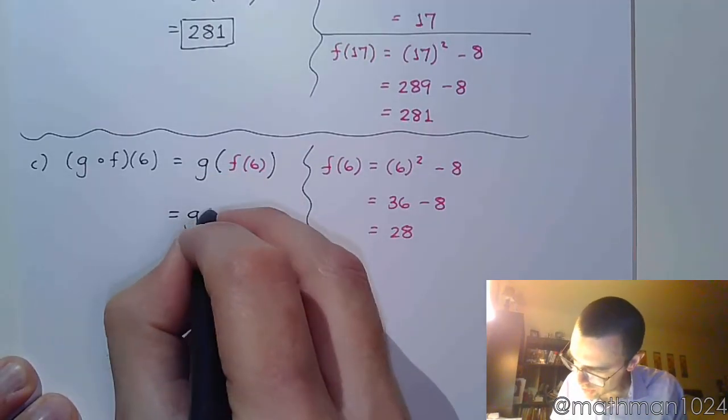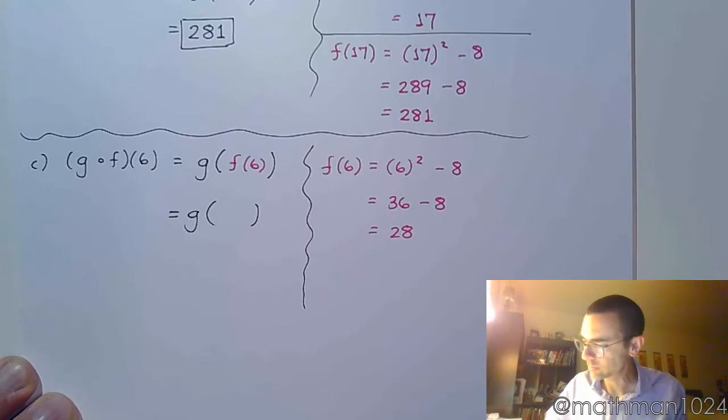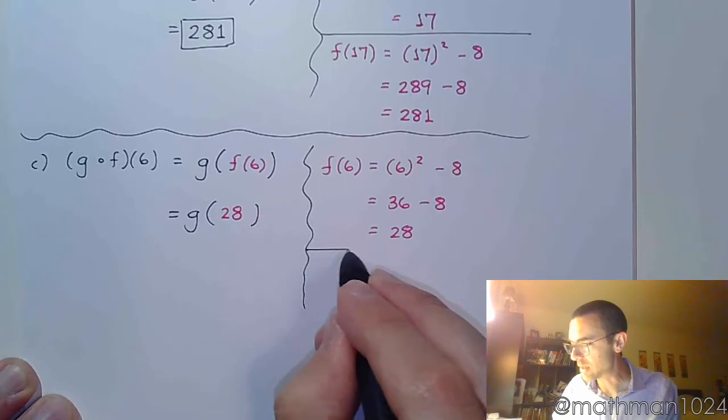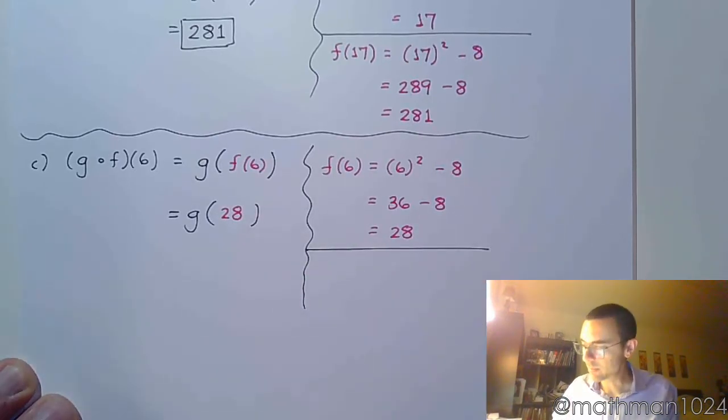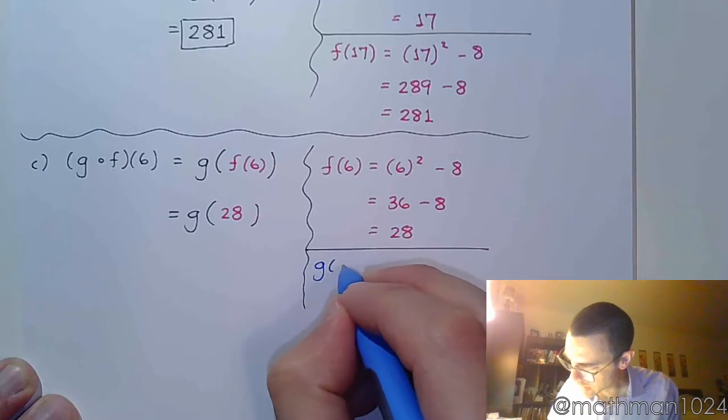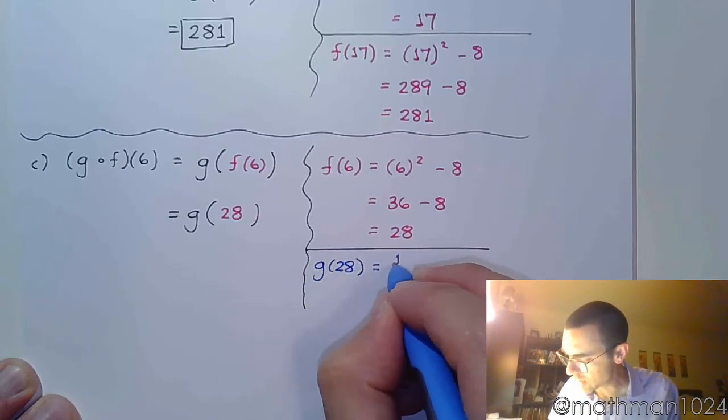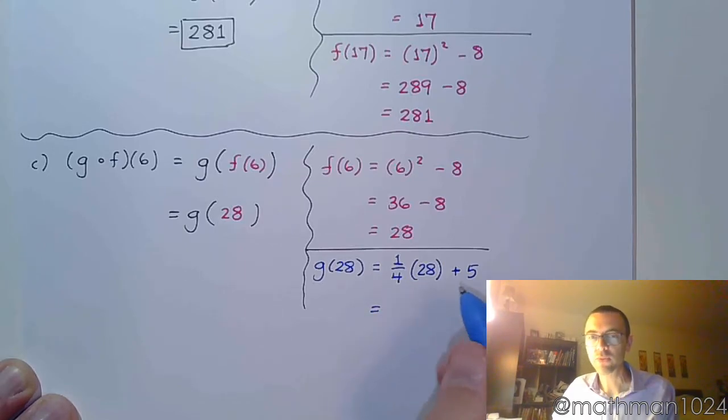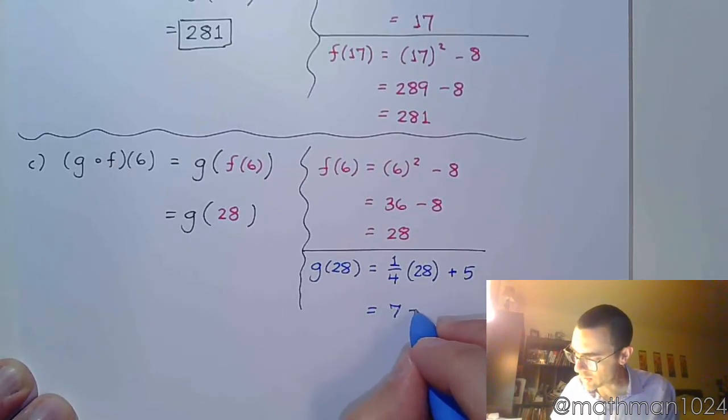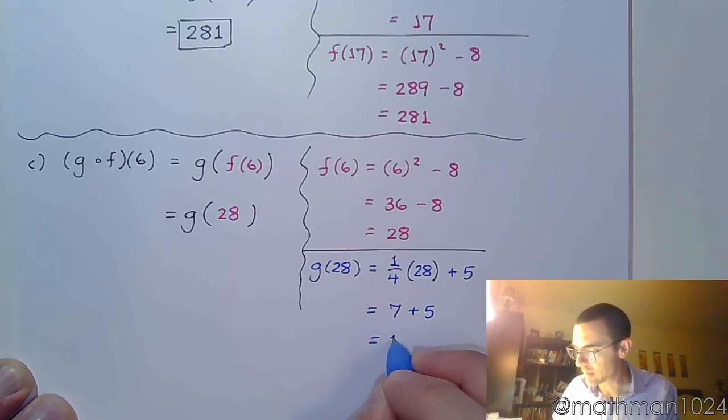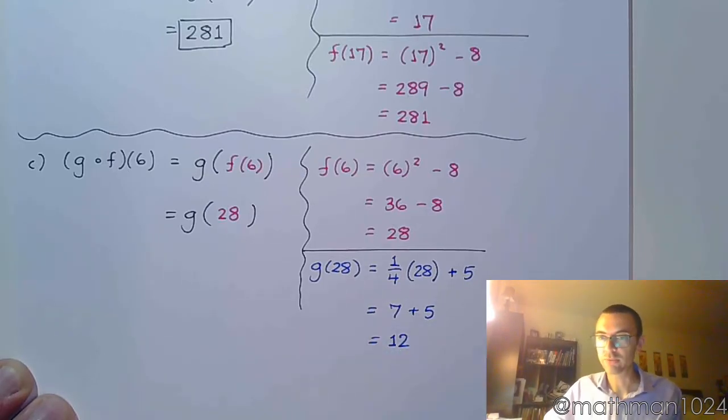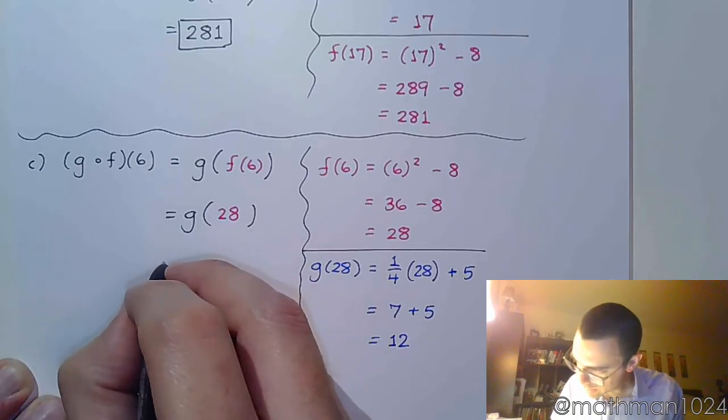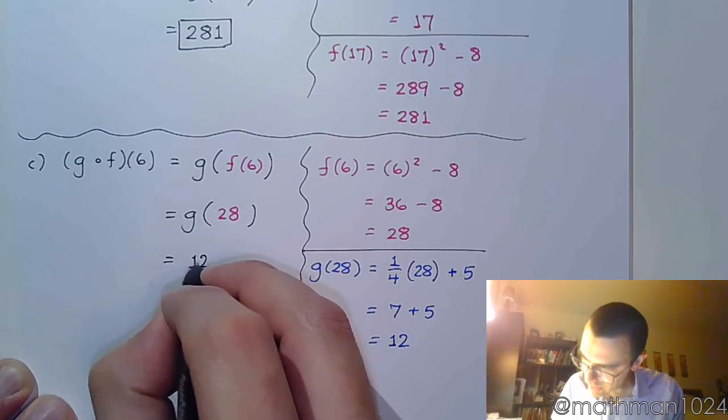And this becomes g of 28. And so now we can go off to the side and work out g of 28. All right. So g of 28 is going to be 1 fourth of 28, and that's plus 5. So 1 fourth of 28 is 7 plus 5, and we get 12. All right. So g of 28 equals 12.